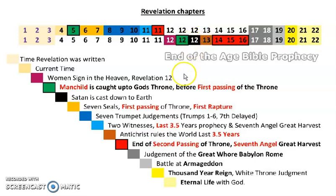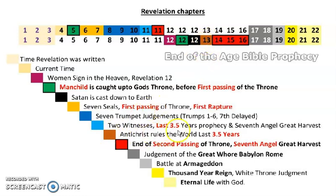In this timeline, the dragon has been cast down and goes off to make war with Israel. Israel flees into the wilderness — this marks the beginning of the last three and a half years. The Antichrist will come and rule for the last three and a half years, as described in Revelation 13. Revelation 11 also covers the last three and a half years, but it tells the story of the two witnesses.